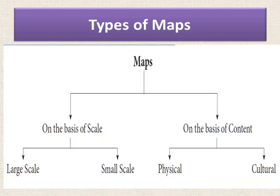Now let us see what are the different types of maps. These maps can be classified on the basis of scale or on the basis of content. On the basis of scale, they can be classified into large scale and small scale. On the basis of content, they can be classified into physical and cultural.